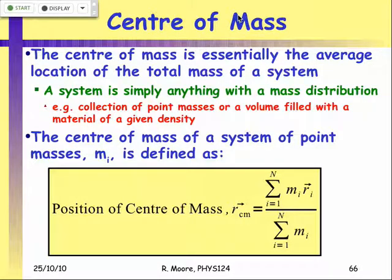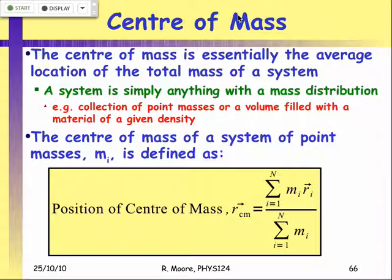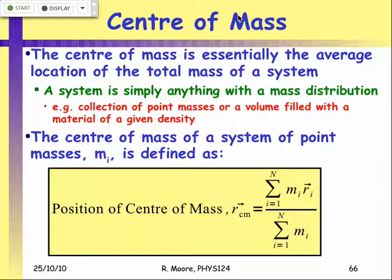Last time we introduced the concept of center of mass as the average location of the mass of an object or system of masses. For a system of individual point masses at different position vectors, it's a weighted average: multiply the mass at each position by the position vector, add all of those together, then divide by the total mass to get the center of mass position.